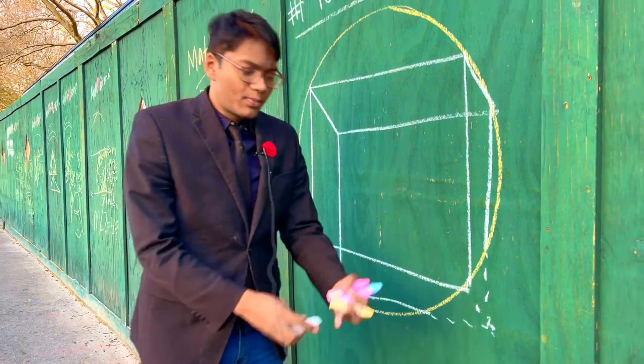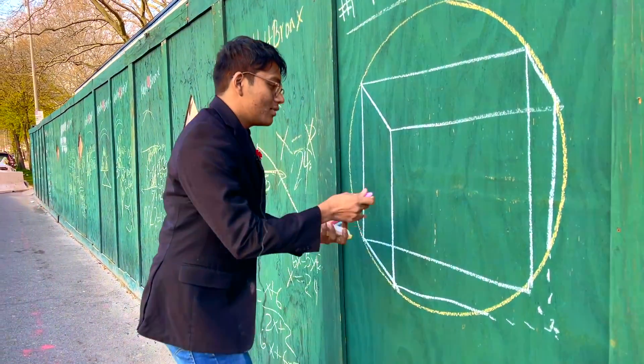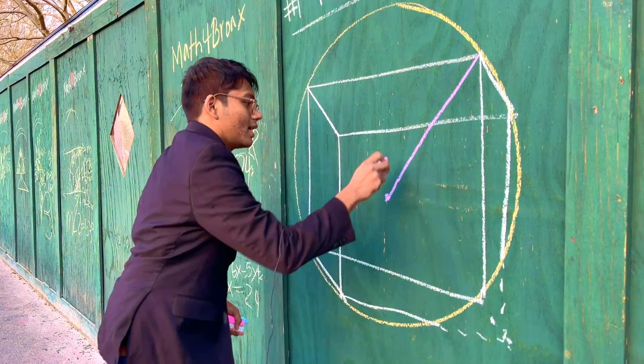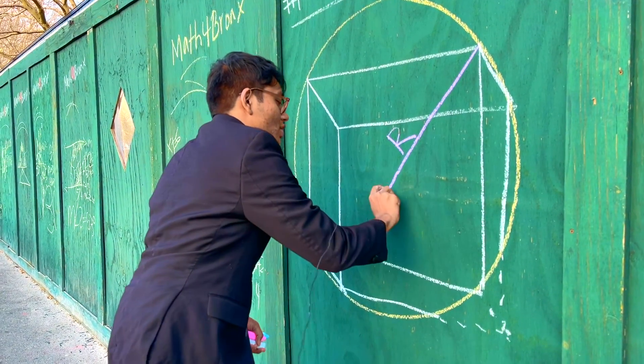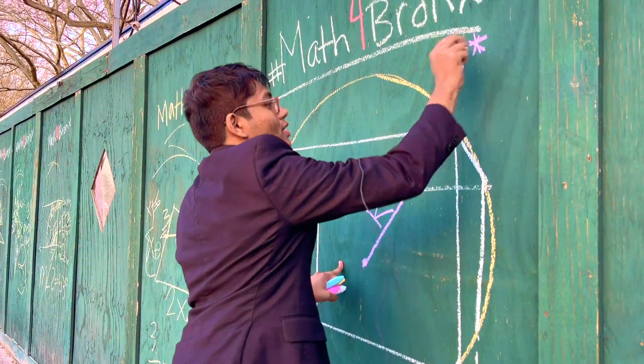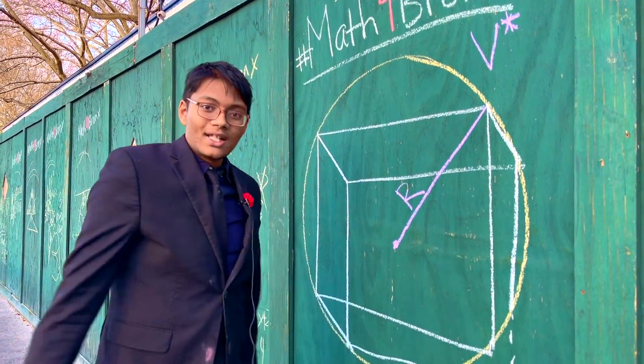So how can we solve this problem if we know that the radius of the sphere is some radius r? If we know that the radius of the sphere is r and the volume is given as v star, how can we find the biggest cube that can fit in this sphere?